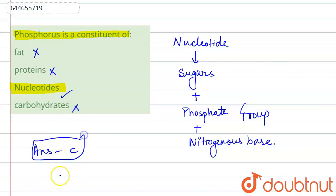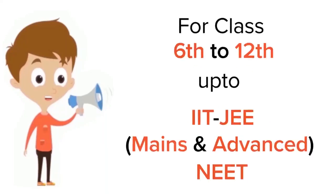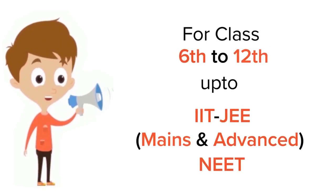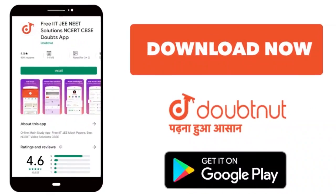Answer of your question is option number C. I hope you can understand this explanation. Thanks a lot. For class 6 to 12th, IIT, JEE and NEET level, trusted by more than 5 crore students. Download Doubtnet app today.